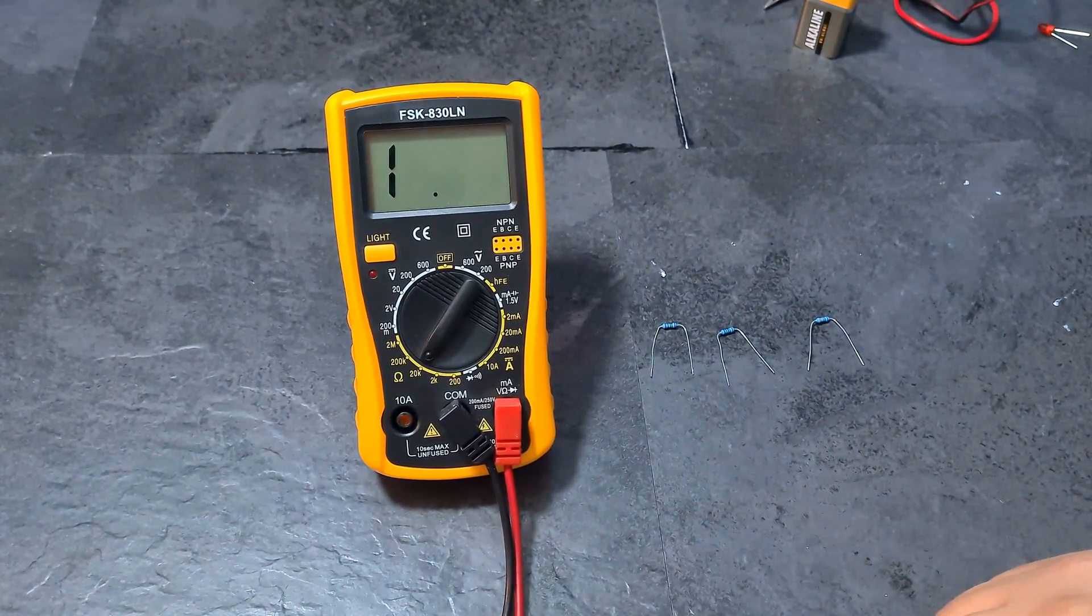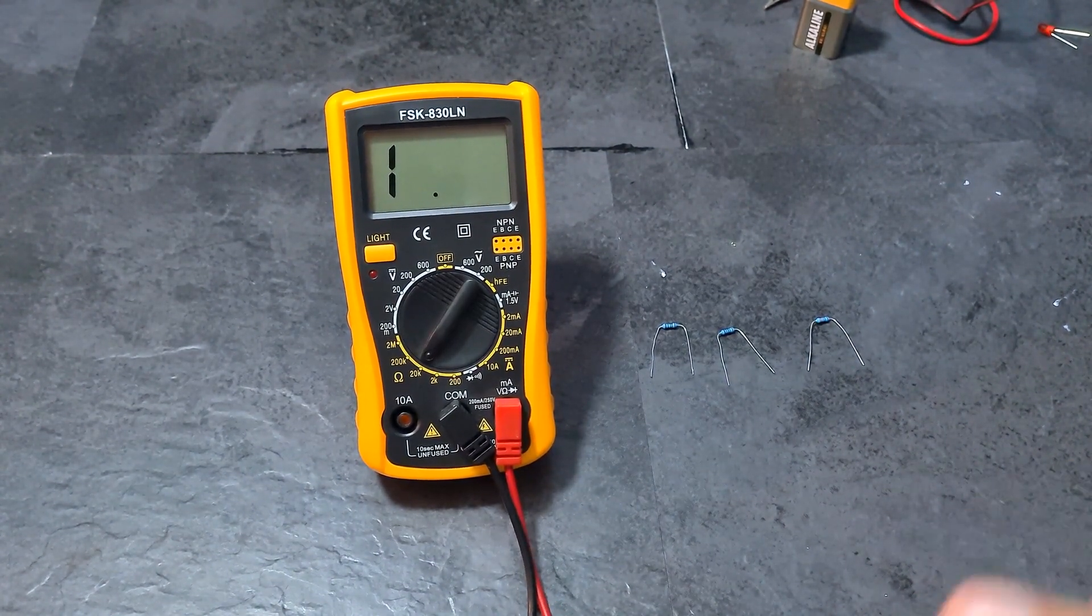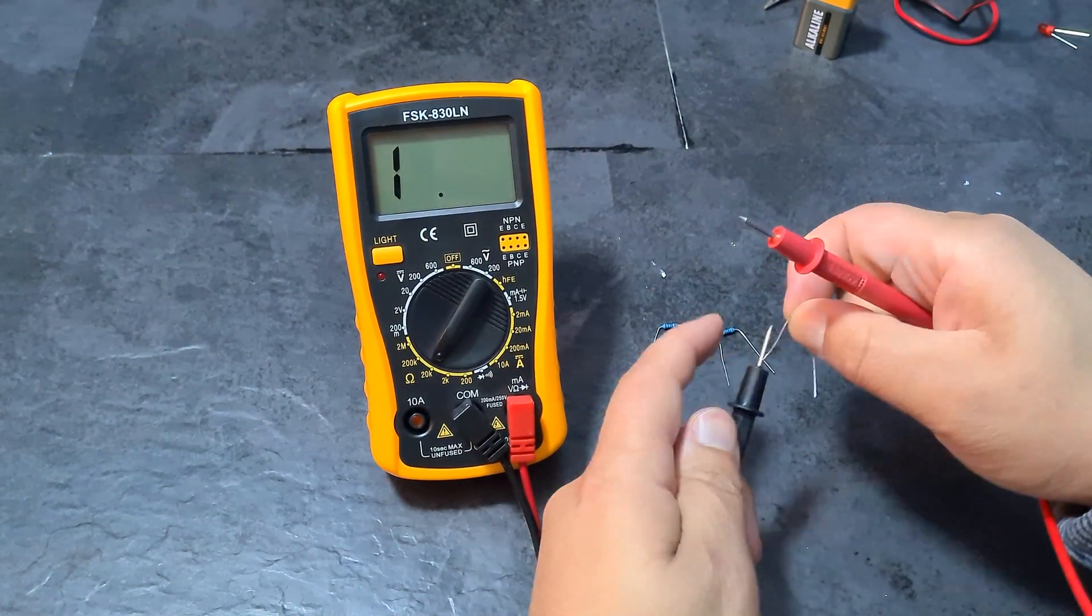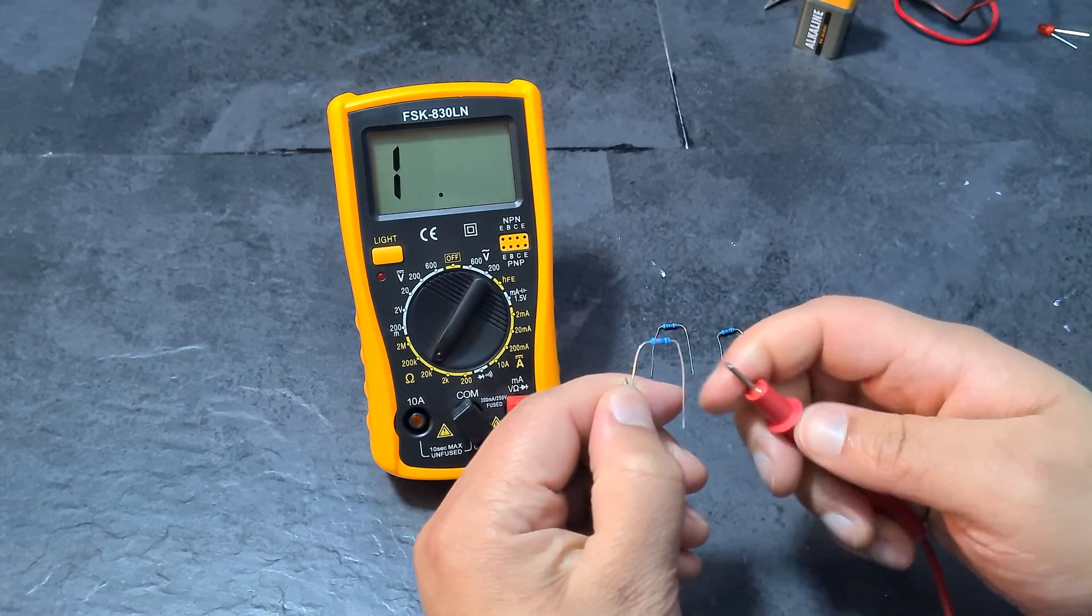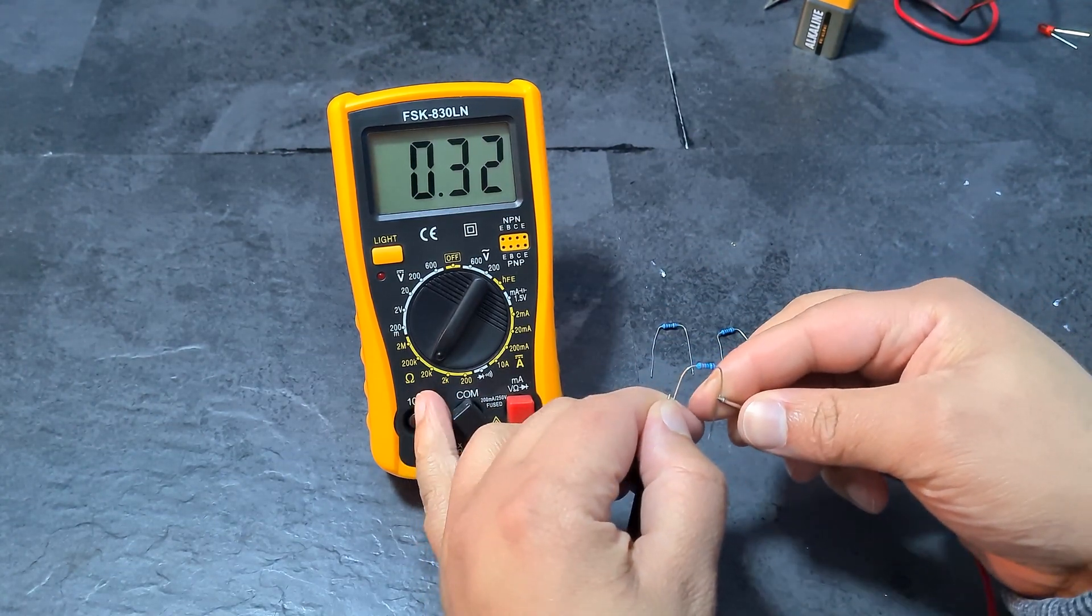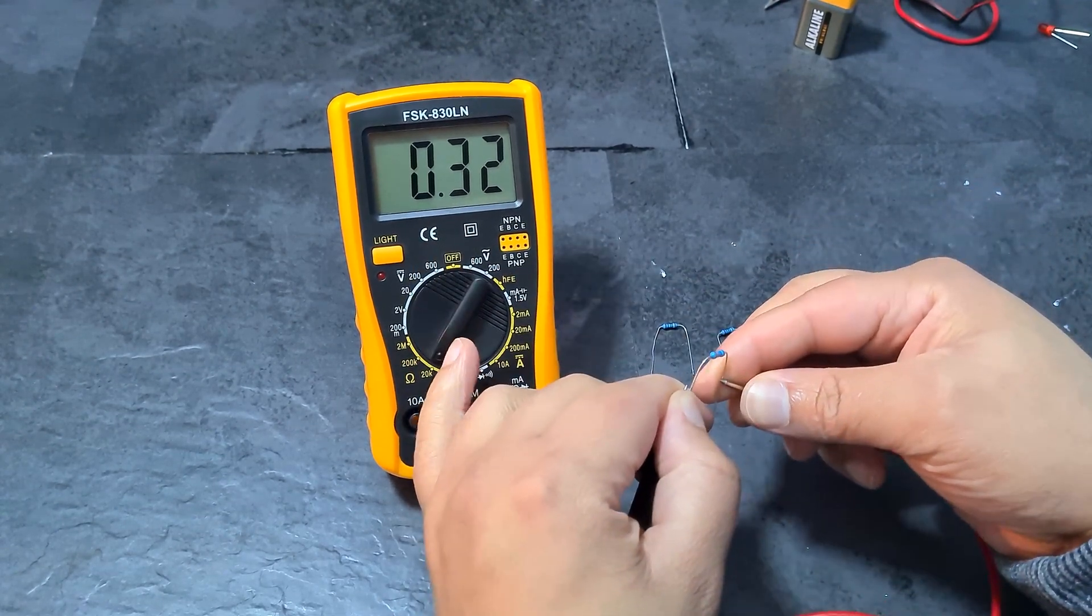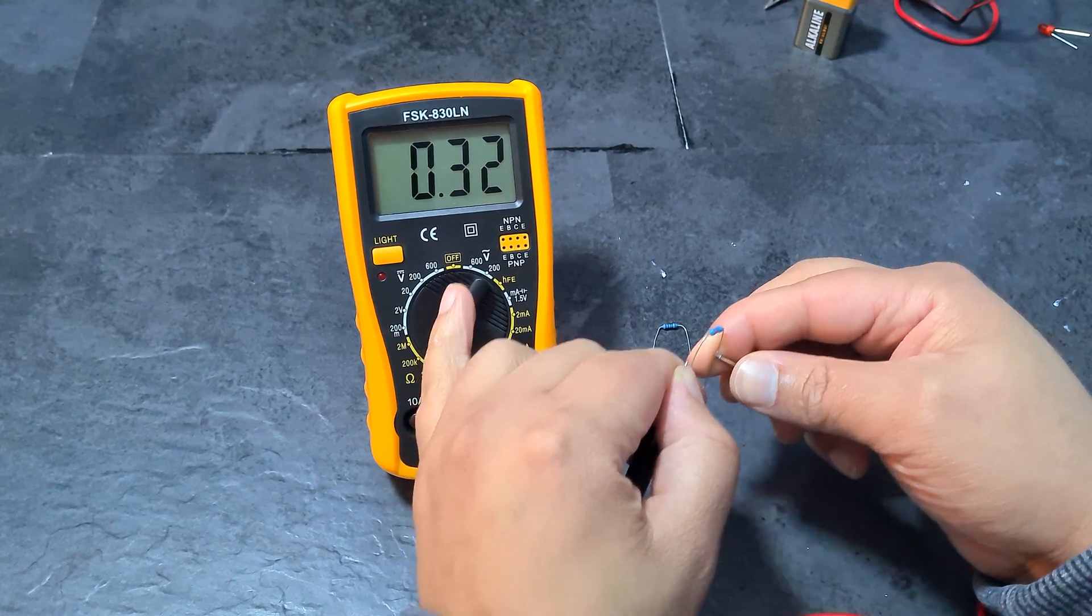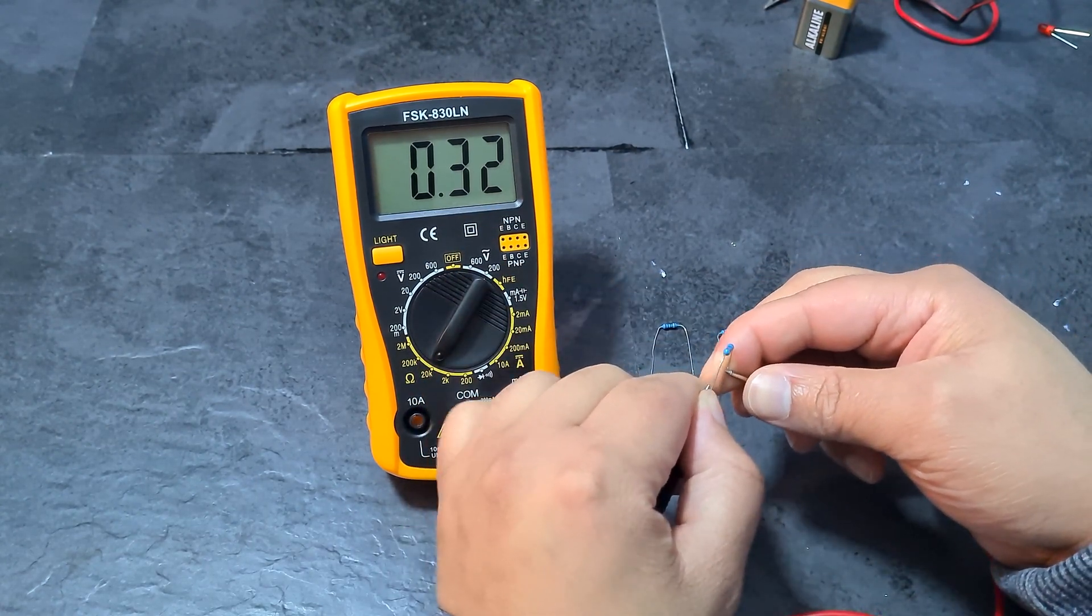So here, I've set it to 20K. You can set it to 2K if you want as well. So just come here, grab the resistor, do it like that. And then now you can see on 20K, if I had a 1, then that would be 1K, right? So I've got 320 or 0.32 kilo ohms, which is, you know, 320 ohms. So this is a 330 resistor.